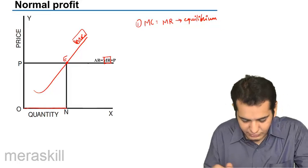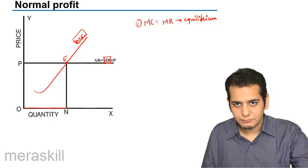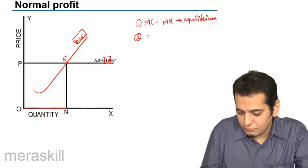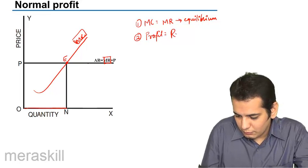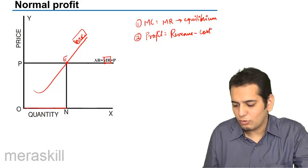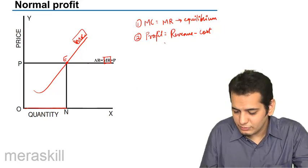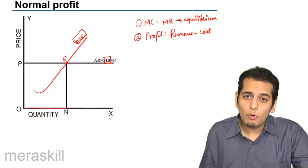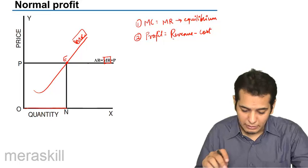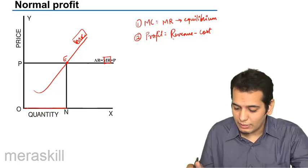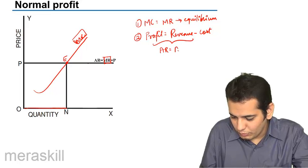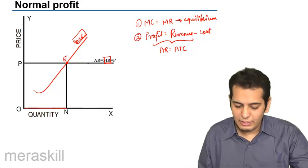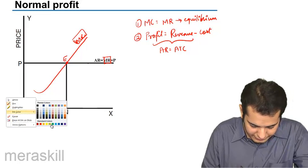So ON is the equilibrium quantity that the seller has to produce and sell in the market. Now the second condition which comes from profit equals revenue minus cost. So the second condition is profit would be in a situation where average revenue is more than my average cost. But in this case we are talking about normal profits, so the condition here is AR is equal to ATC. At the point of equilibrium where MC equals MR, AR should be equal to ATC. So let me draw an ATC for you.